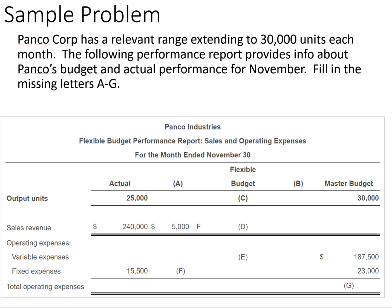Here's a sample problem where we need to fill in the missing information on a flexible budget performance report. Starting at the top, they give us the output units — actual versus the flexible budget versus the master budget. We are also given sales revenue, operating expenses, variable expenses, fixed expenses, and total operating expenses.